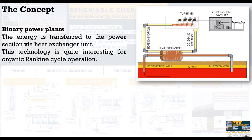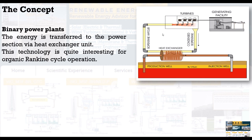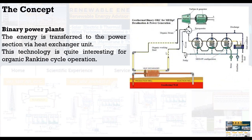The third one we are going to look at today is binary power plants. Power is transferred to the power section by a heat exchanger unit — an intermediate unit to transfer geothermal energy to an organic Rankine cycle. The working fluid we use may be toluene, depending on how deep you dig and what temperature is available from geothermal energy.